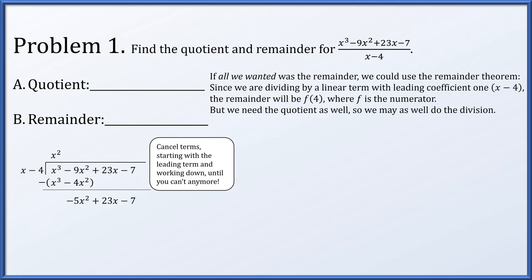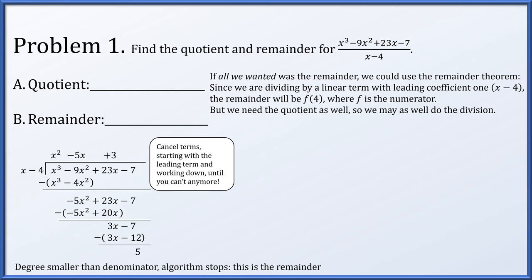What would you multiply x minus 4 by to cancel out negative 5x squared? You'd multiply by negative 5x, which gives that negative 5x squared and also a plus 20x. Subtracting leaves the linear term 3x minus 7. Now, what would you multiply x minus 4 by to cancel out 3x? You'd multiply by 3, giving 3x minus 12. After subtracting, we have 5. We stop here because the constant term 5 — a degree 0 polynomial — is of smaller degree than what we're dividing by, x minus 4, a degree 1 polynomial.